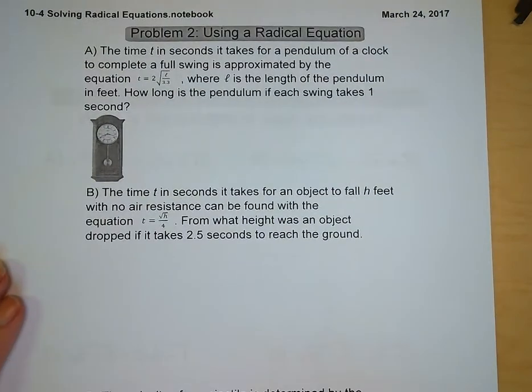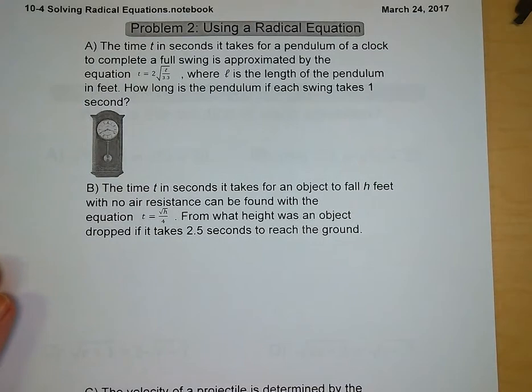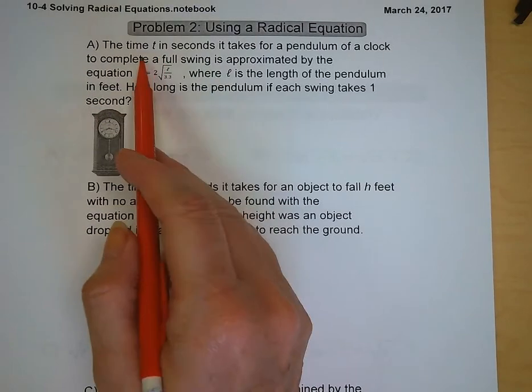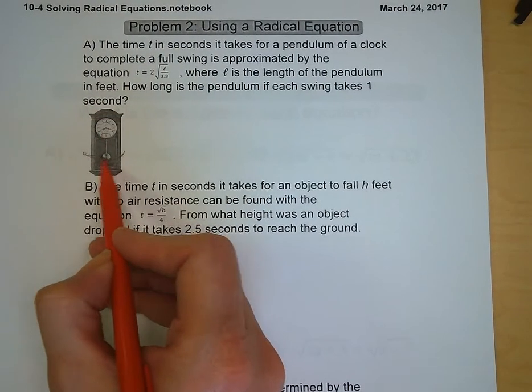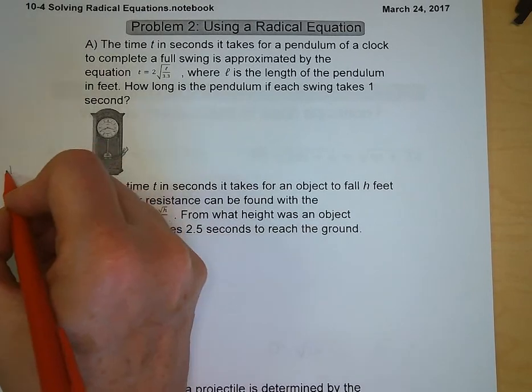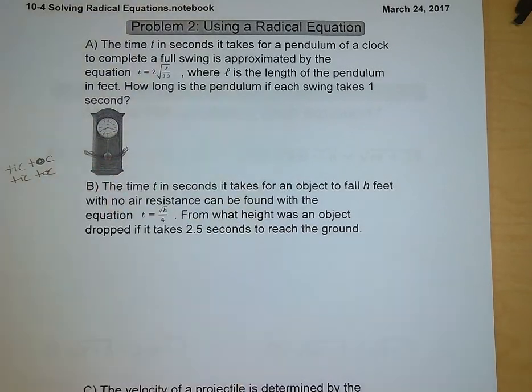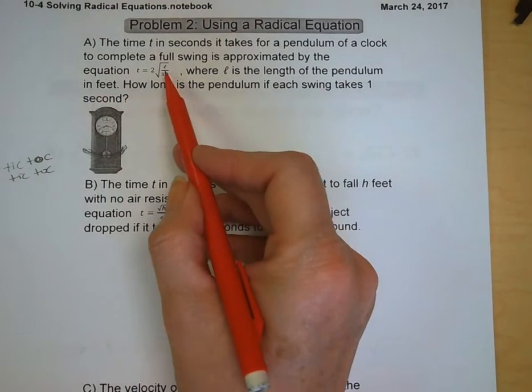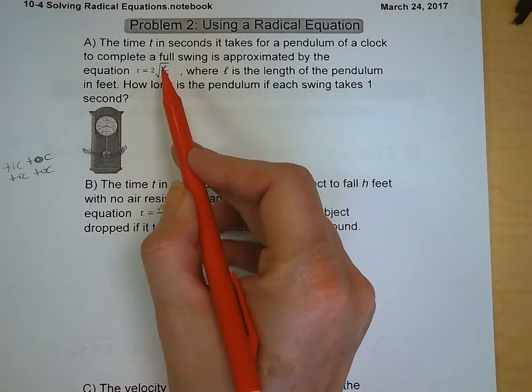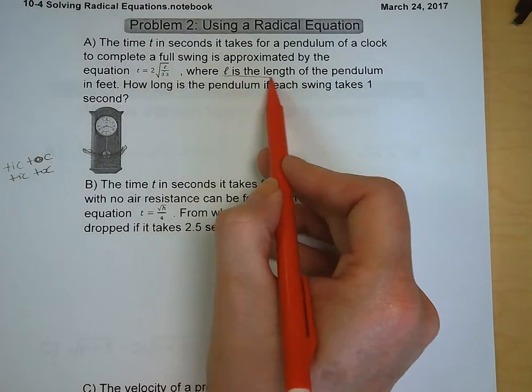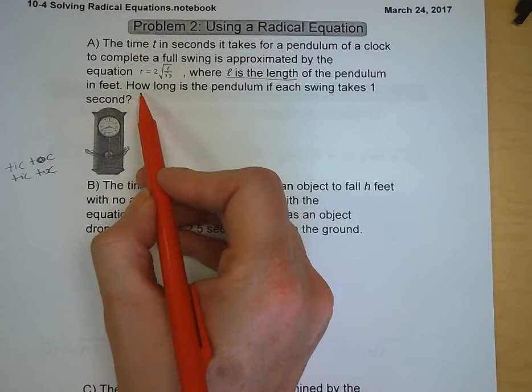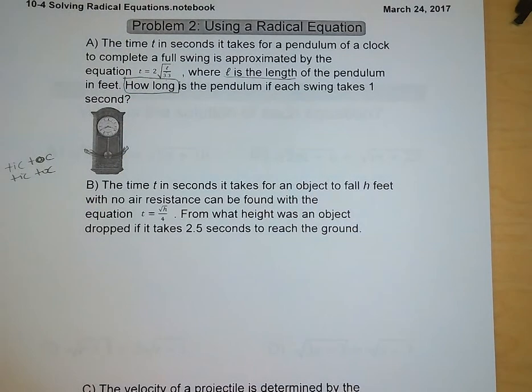Problem number 2 is going to be using a radical equation. So these are times that we see radical equations showing up, and one of those is when we're determining the time in seconds when a pendulum is swinging. So you guys worked with pendulums in science class a couple weeks back. So our first question says the time t in seconds it takes for a pendulum of a clock to complete a full swing is approximated by the equation t is equal to 2 times the square root of the length of the pendulum divided by 3.3. And we want to know how long the pendulum is if the swing is 1 second.